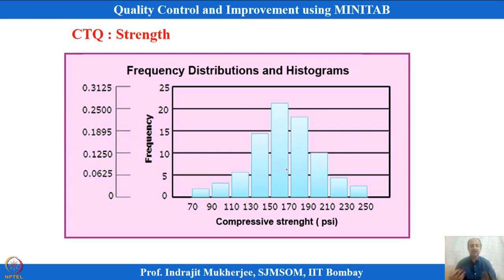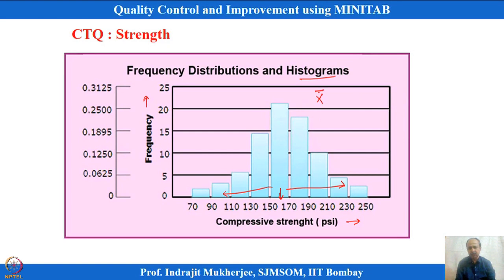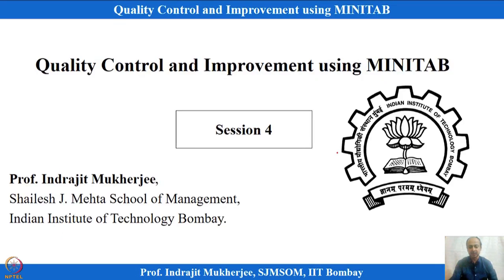If strength is a CTQ, we can draw a histogram — with frequency on one axis and strength on the other. This gives some idea of where the mean of the data set is and what the spread is. The mean of a sample data set is expressed using X-bar, and the spread using standard deviation. In quality, what mean and standard deviation mean — and techniques to minimize variance and bring the mean to the target — will be our discussion.